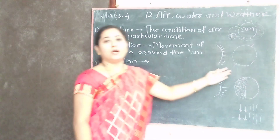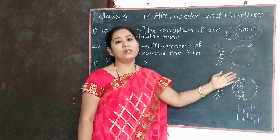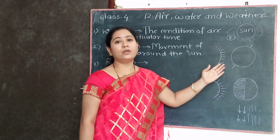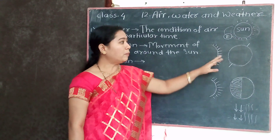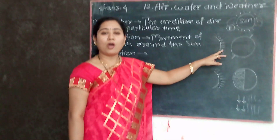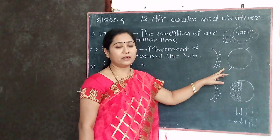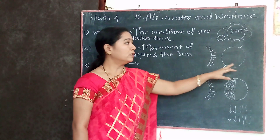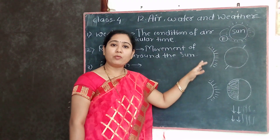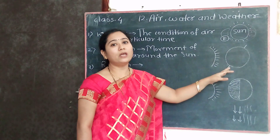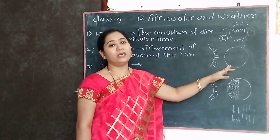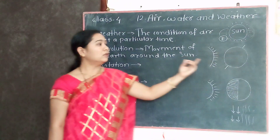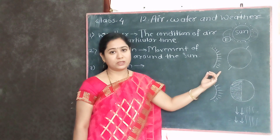Our earth is also tilted at its axis at an angle. Because of this, some part of the earth comes in front of the sun and some does not. The part facing the sun has longer and hotter days — that is summer. The part facing away from the sun has shorter and cooler days — that is winter. Because of the revolution of the earth, the weather and seasons change.